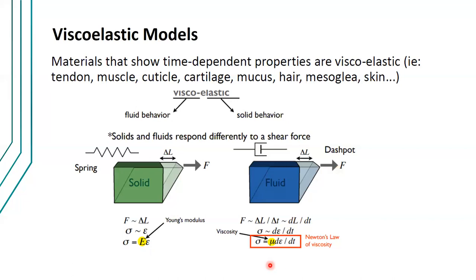So the difference is: in solids, stress is proportional to strain, but in fluids, stress is proportional to the rate of strain — d epsilon over dt. The constant of proportionality is viscosity, which is Newton's law of viscosity, as opposed to Hooke's law for solids. The term d epsilon/dt is the same as dv/dt in fluid mechanics; dimensionally they are equivalent.